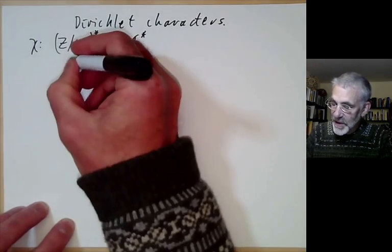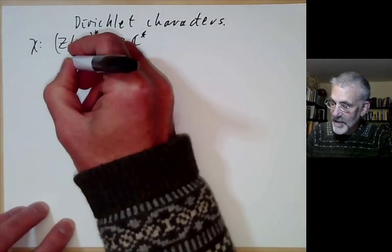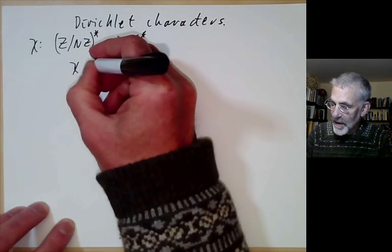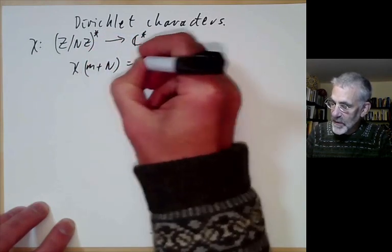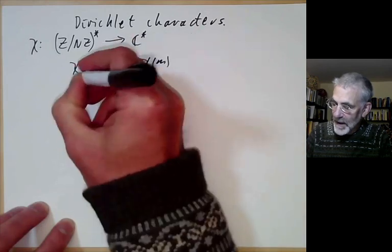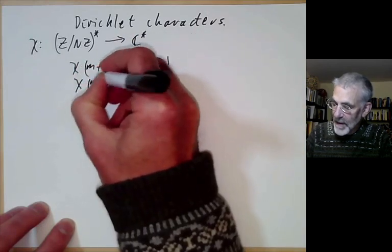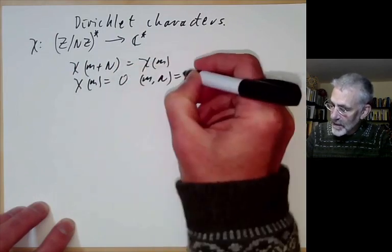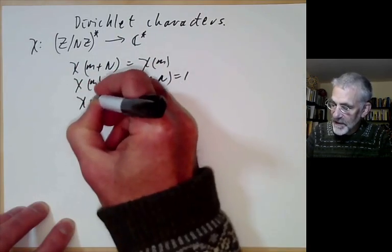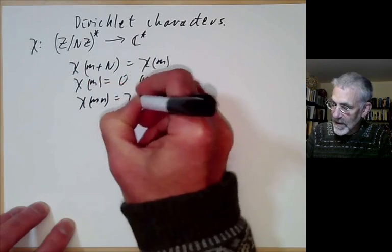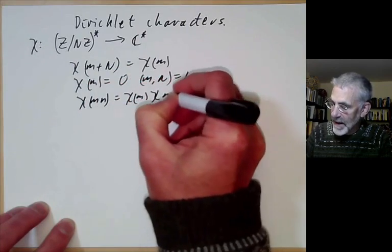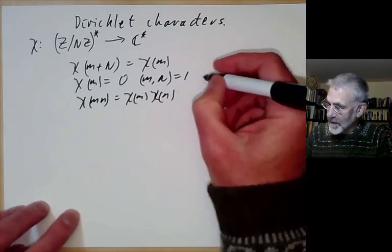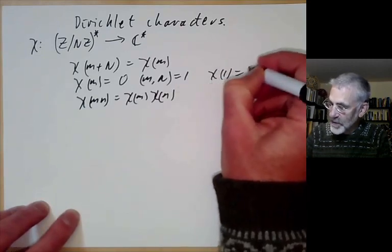An alternative way of saying this is that chi is a function from integers to complex numbers such that chi of m plus n equals chi of m, chi of m equals zero if m and n are not co-prime, chi is multiplicative so chi of mn equals chi of m times chi of n, and chi of 1 equals 1 to ensure it's non-trivial.